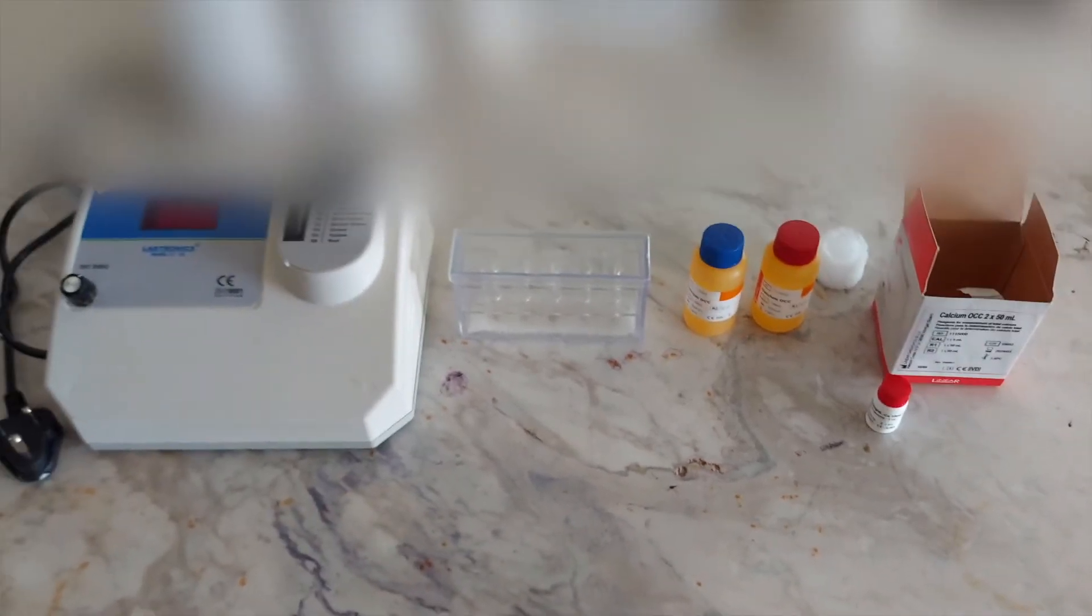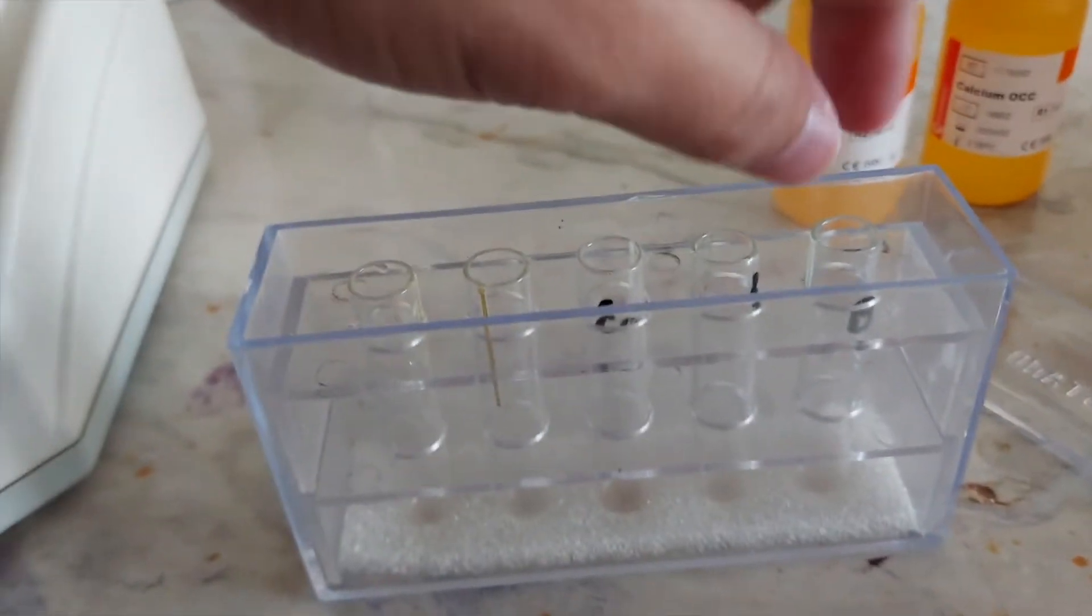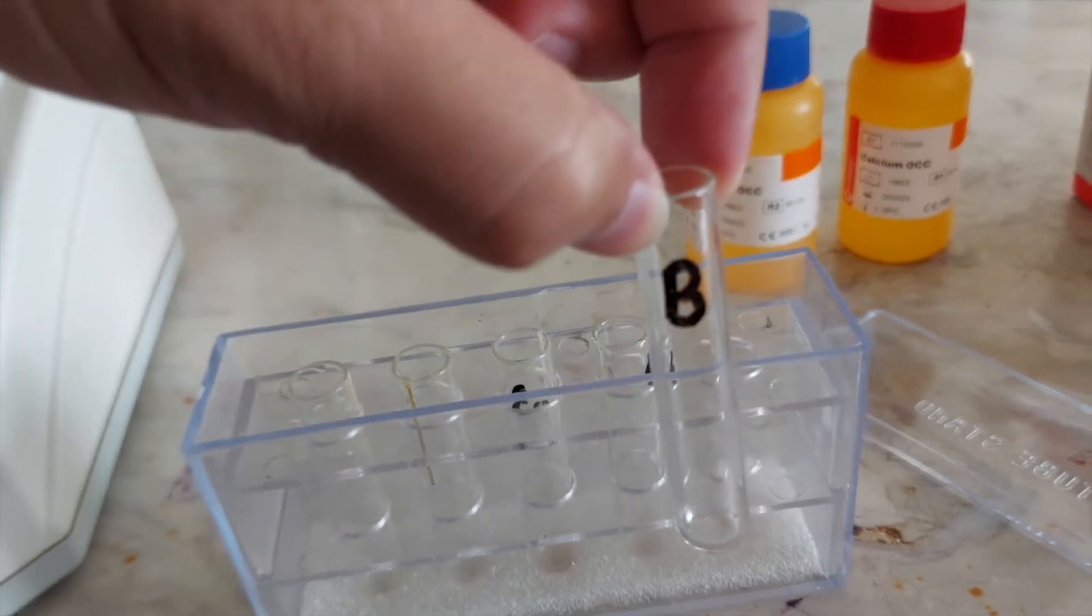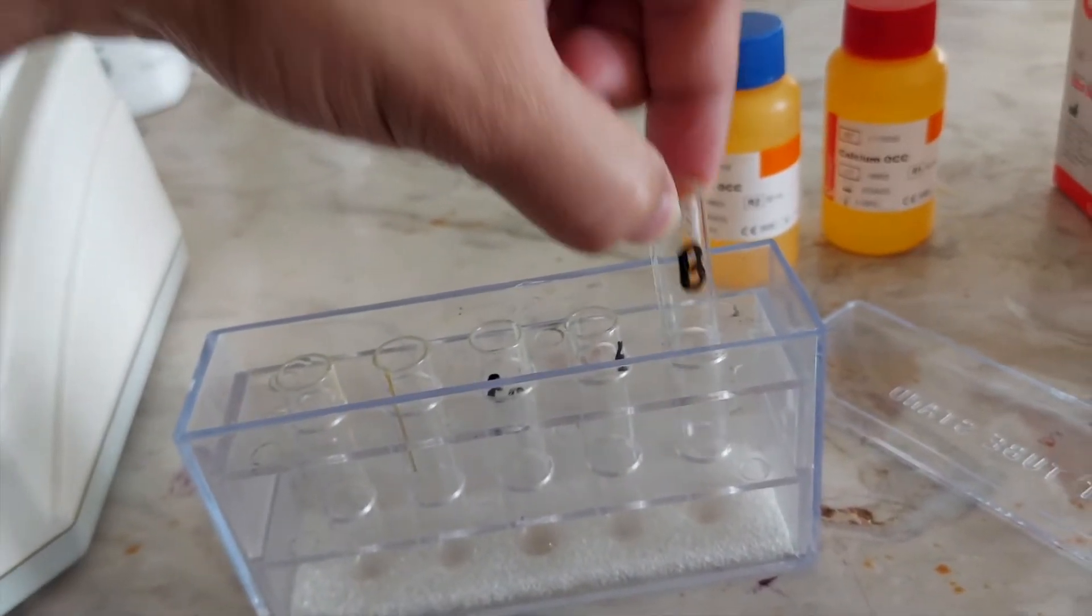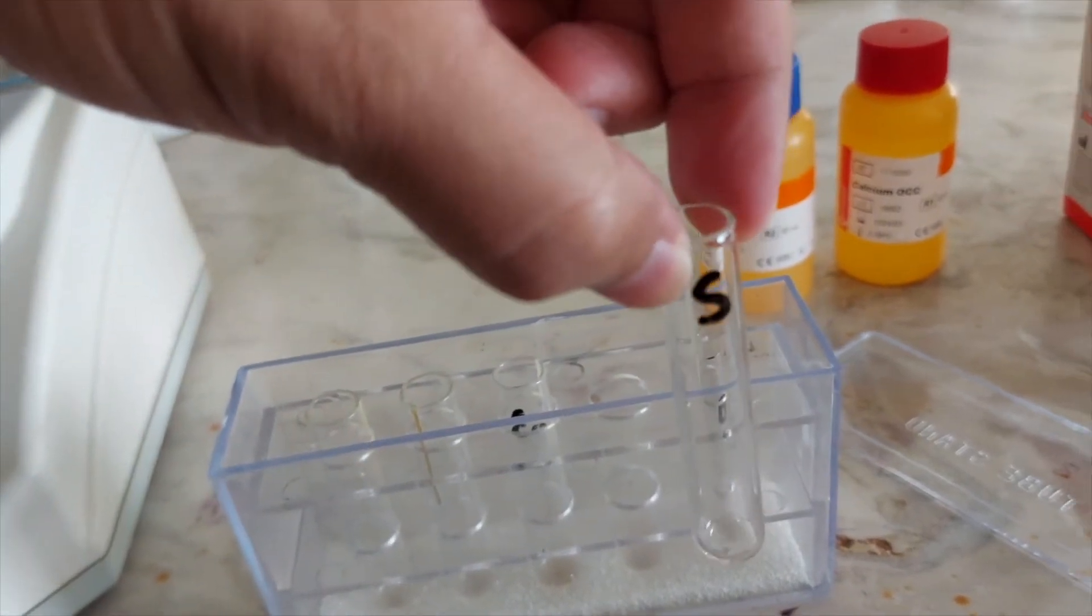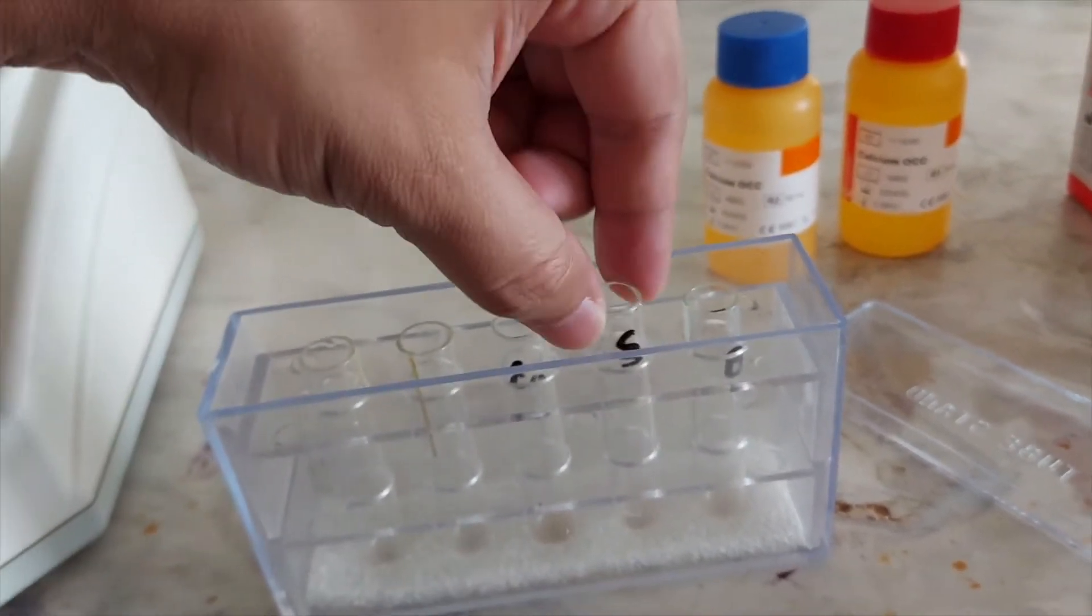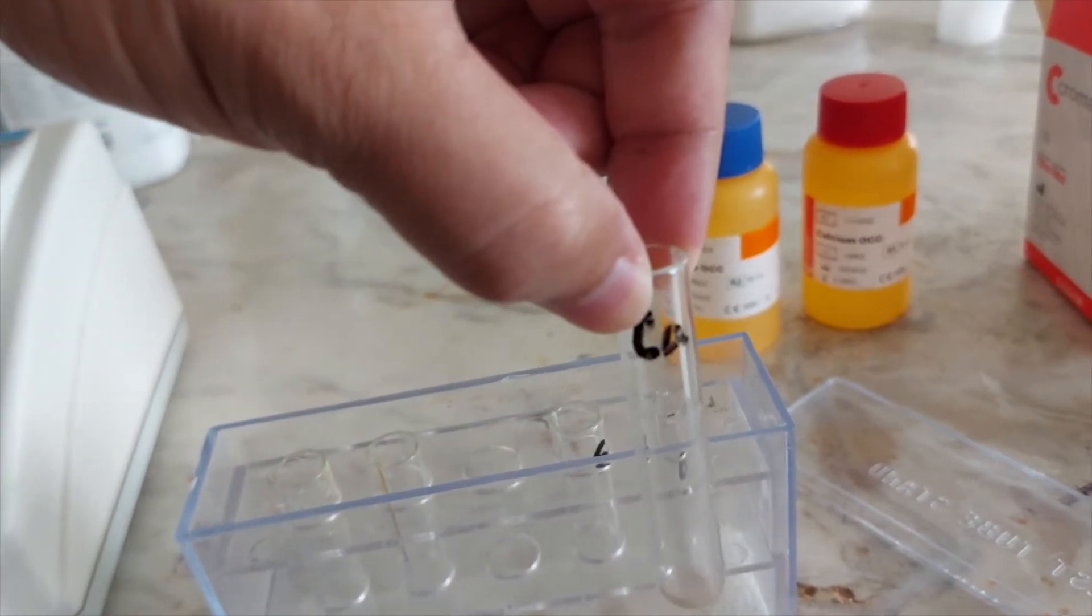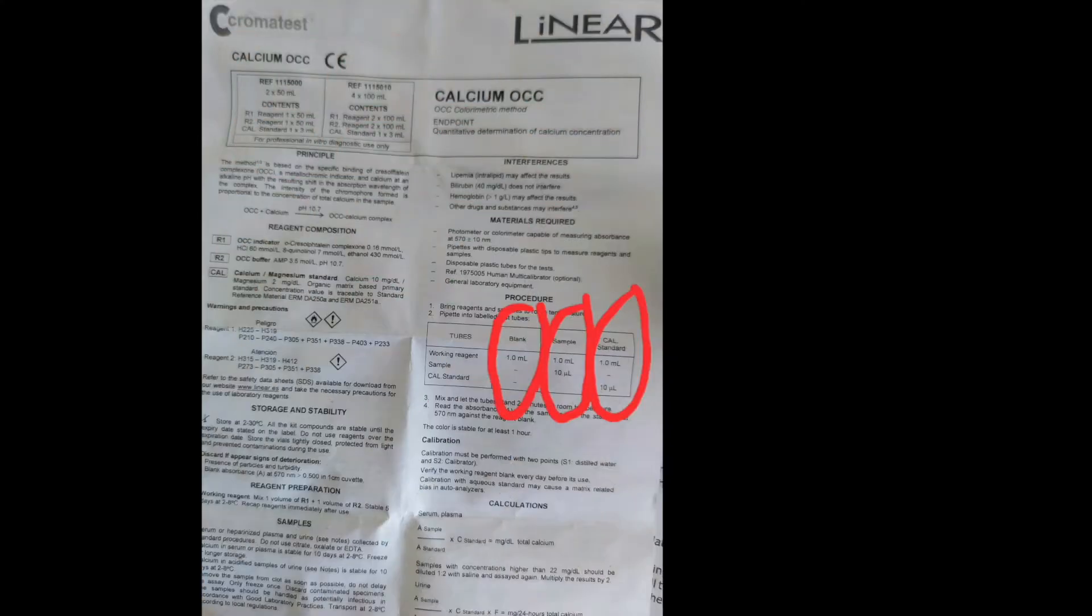Now first of all, we are going to make the working reagent. I have already labeled my cuvettes. This one is B or blank, which will contain only the working reagent. This one's S, and it will contain working reagent and the sample. This is labeled as CA, hence will contain working reagent and the calcium standard.